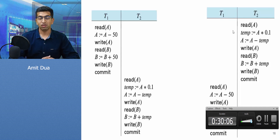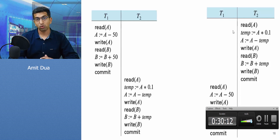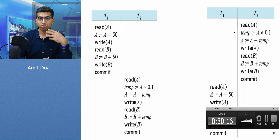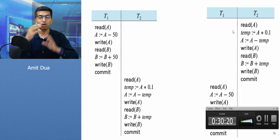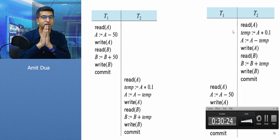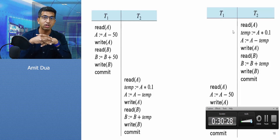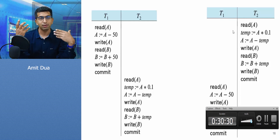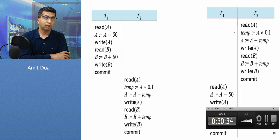We have seen what is real design and also that we need concurrent transactions — we need to execute transactions in a concurrent fashion to improve performance and reduce response time. We also saw that when multiple transactions work, the order in which they are executed on the processor is called a schedule.